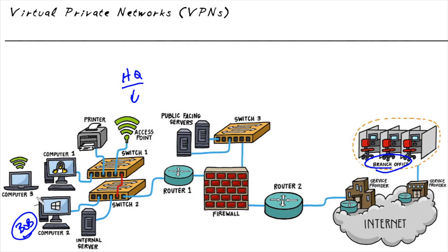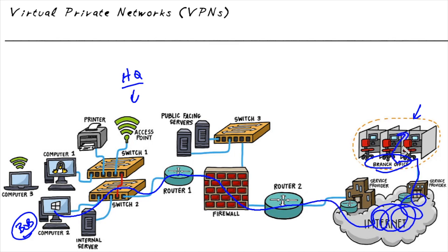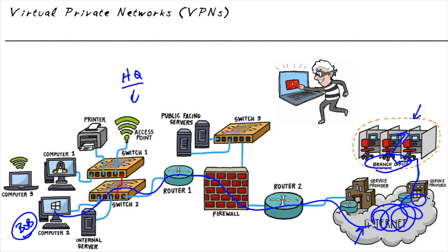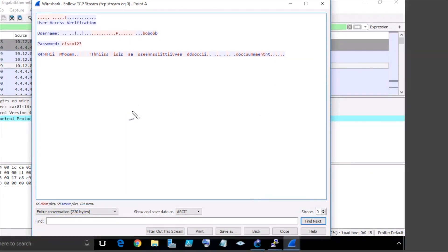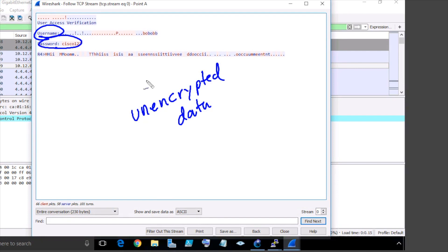When Bob sends packets and traffic to a server over at the branch office, that traffic goes through the router, through the firewall, through this router, through the internet, and finally ends up at the branch office and at the server. The challenge is that if there's an eavesdropper anywhere in that path listening to the traffic, they can copy it and, if it's not protected with encryption, make sense of the data — ruining confidentiality.